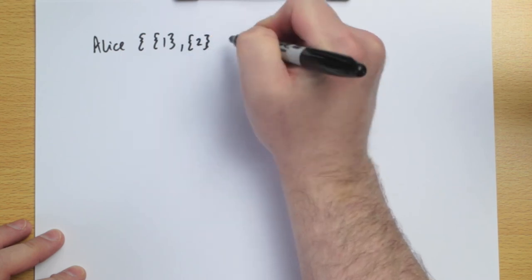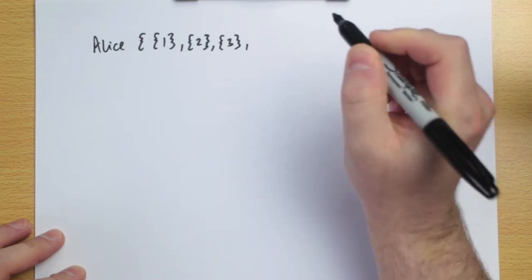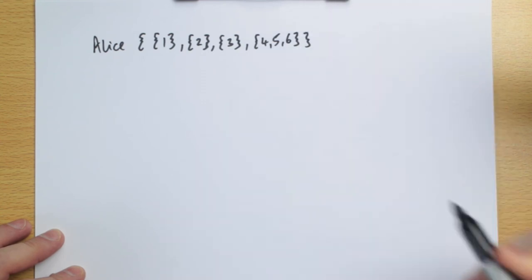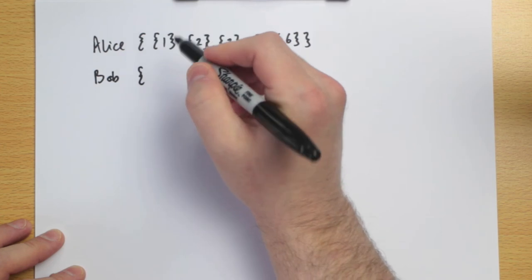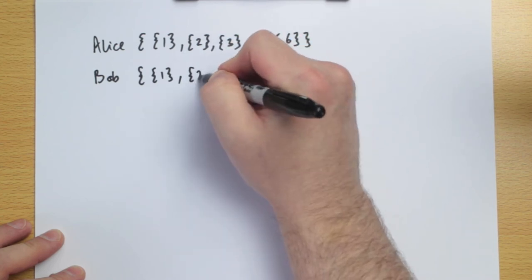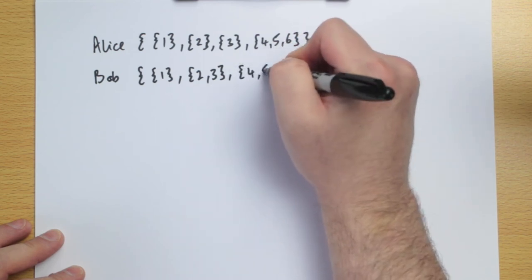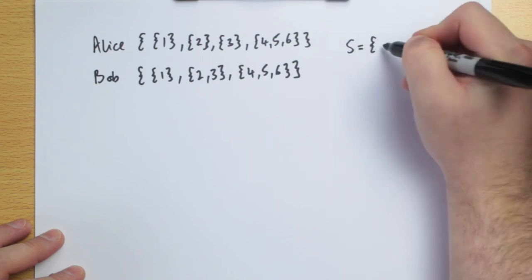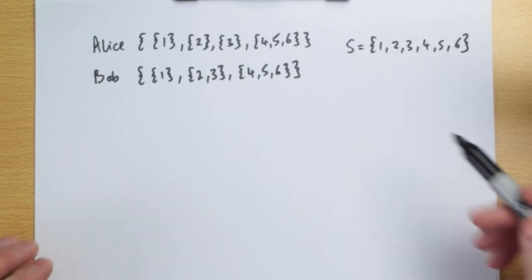Alice's information structure is a set containing four subsets: {1} by itself, {2} by itself, {3} by itself, and {4, 5, 6}. Bob's information structure has an information set containing just {1} by itself, an information set containing {2, 3}, and an information set containing {4, 5, 6}. The state space is {1, 2, 3, 4, 5, 6}, and we're going to need to check every single state.